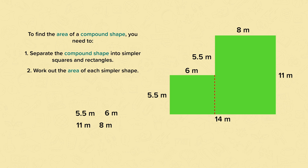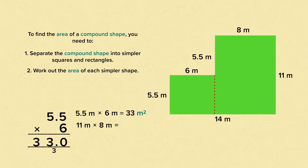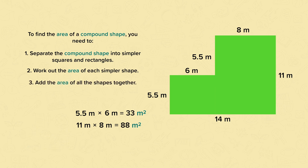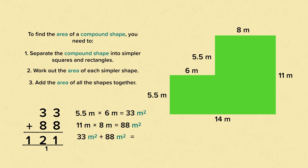Next we work out the area of each simpler shape. Let's find the area of the smaller rectangle first by multiplying its length and its width. 5.5 multiplied by 6 is 33. The area of the smaller rectangle is 33 metres squared. Let's do the same for the larger rectangle — we know from our times tables that 11 times 8 is 88. The area of the larger rectangle is 88 metres squared. Finally, we add the area of all the shapes together. 33 plus 88 is 121. The area of the entire compound shape is 121 metres squared. Make sure to include the right unit.